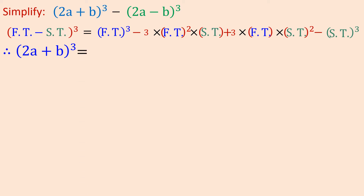Let us expand (2a + b)³. The first term is 2a and the second term is b, and we are using a plus sign here. So all terms will be positive. (2a)³ equals 2a × 2a × 2a, which is 8a³. Expanding fully, you get 8a³ plus 12a²b plus 6ab² plus b³. So this is the result for (2a + b)³.